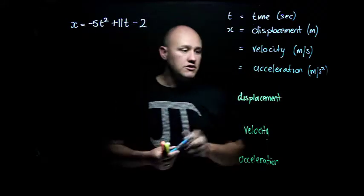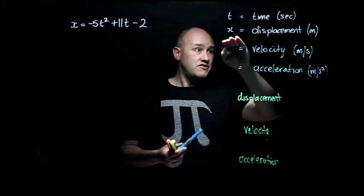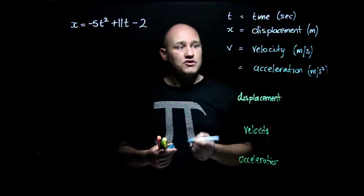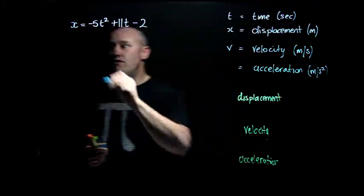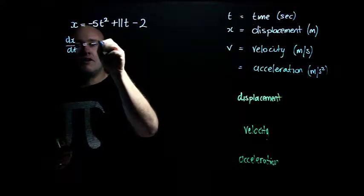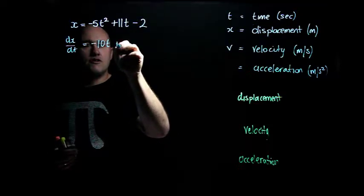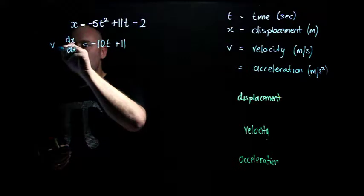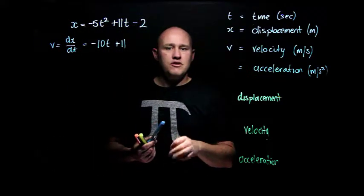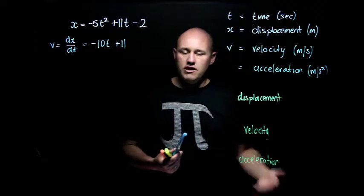Here's my function. It turns out that if x is my displacement, this is the math - it's the easy bit. If x is my displacement and v is my velocity, it actually turns out that if I derive this, dx/dt, which is equal to negative 10t plus 11, that's actually my velocity. Think about this for a second: velocity measures the rate of change of displacement.